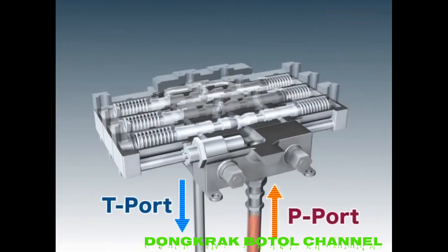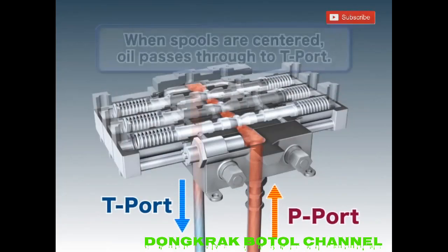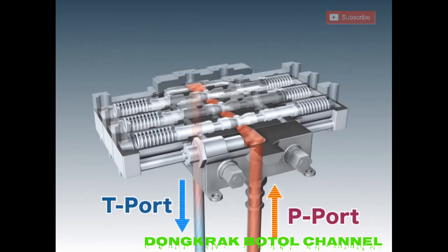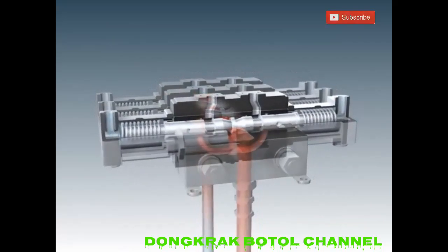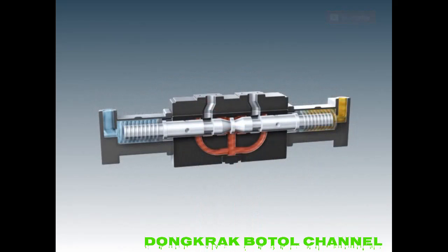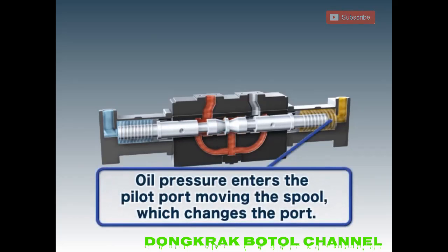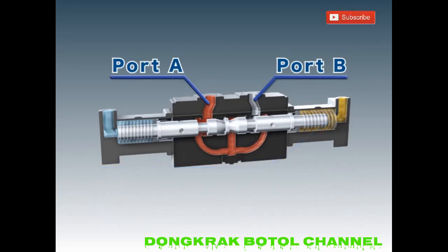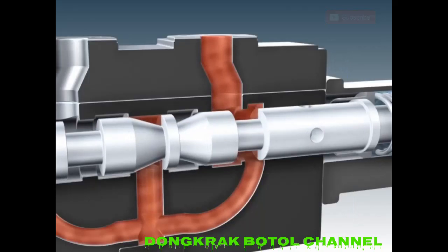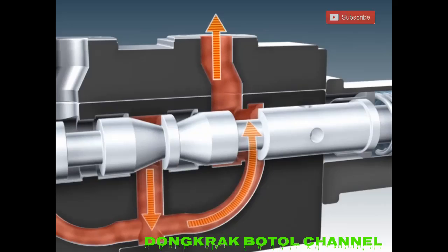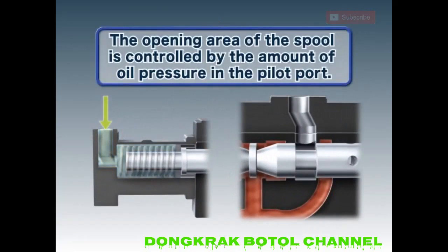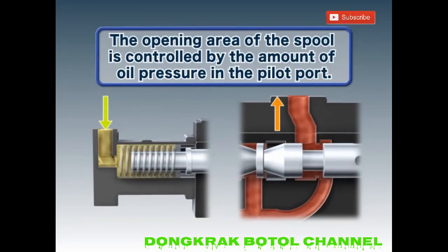When all the spools are centered, hydraulic oil from the pump port passes through the central passage and each valve passage exiting to the tank port. The pilot port of the multiple control valve receives hydraulic oil from the remote control valve. Pilot pressure from the remote control valve moves the spool and redirects the hydraulic oil from the pump port to either port A or port B. The spool continues to move until the pressure applied to the pilot port balances with the return spring on the opposite side, changing the opening area which in turn adjusts the flow rate.